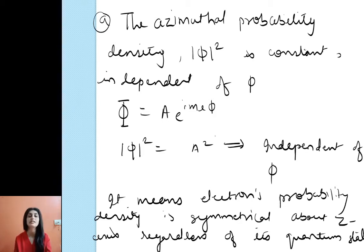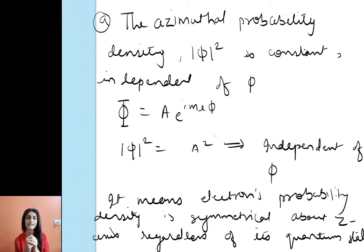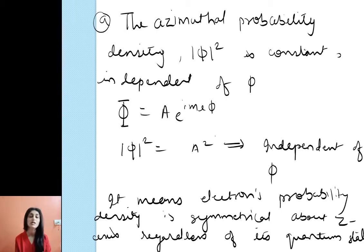The wave function phi, as seen in the earlier lecture, is given by Φ = A · e^(i·m_l·φ), and |Φ|² = A². It is independent of phi. This means the electron's probability density is symmetrical about the z-axis regardless of its quantum state. Spherically symmetric: for a nucleus, at all points on the circumference the probability comes out the same.